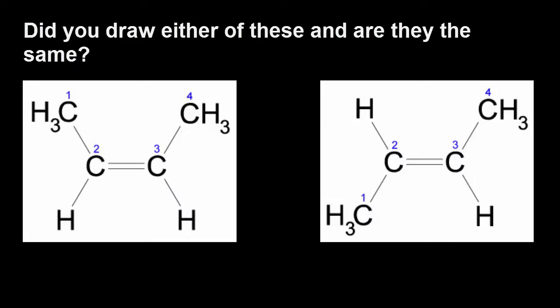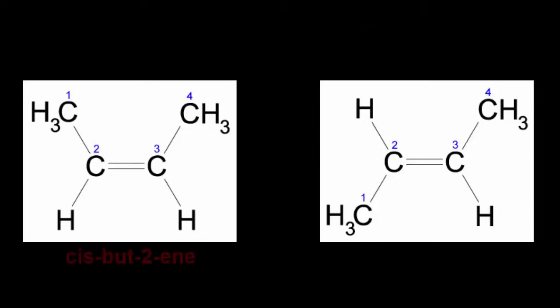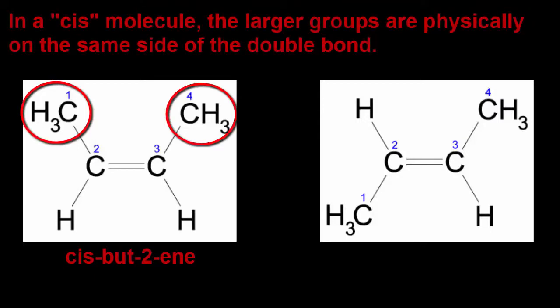These are both but-2-ene, but notice how the CH3s at carbons 1 and 4 are arranged either on the same or on opposite sides of the double bond.